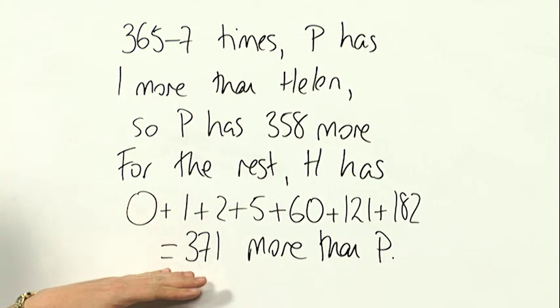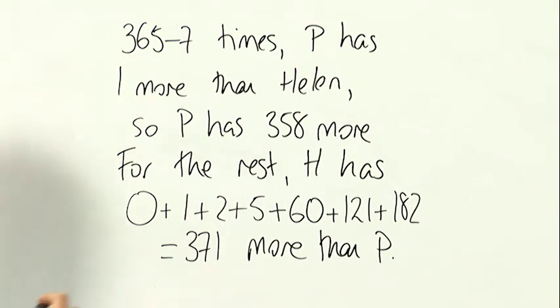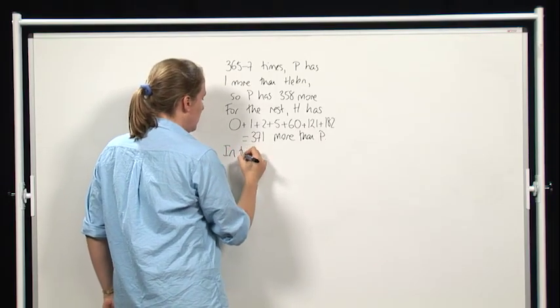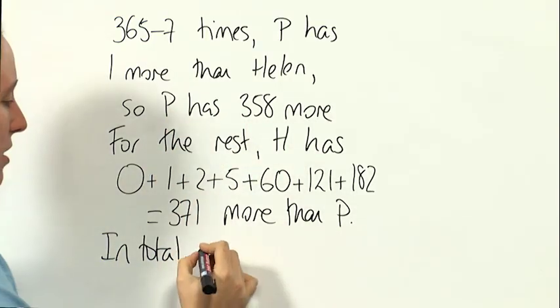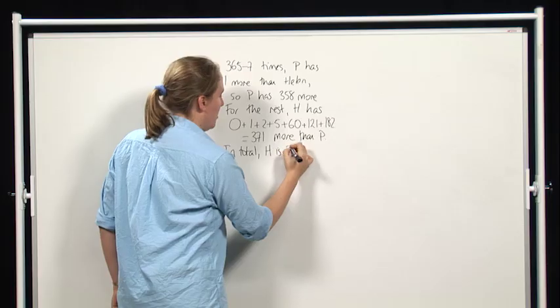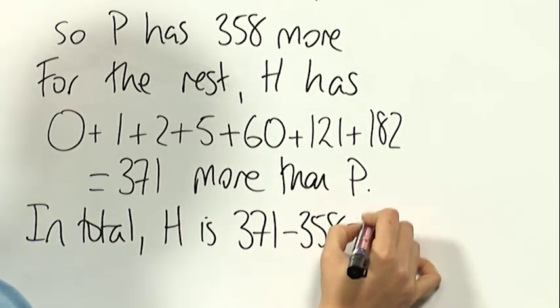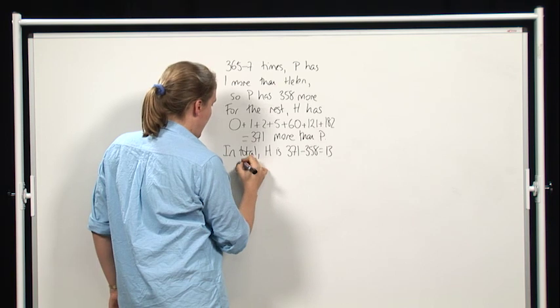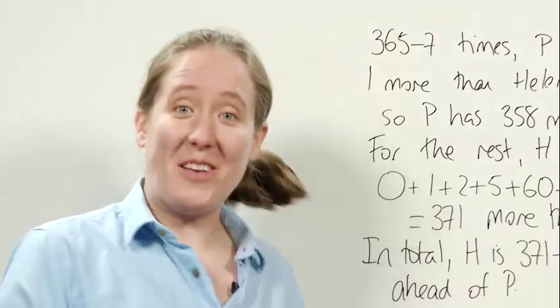So our conclusion is that Helen has 371 more than Phil here. Phil has 358 more than Helen here. So in total, Helen's ahead, because this one's bigger. And Helen is 371 minus 358, which is 13 ahead of Phil. So that's our conclusion.